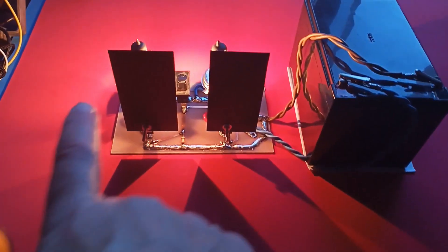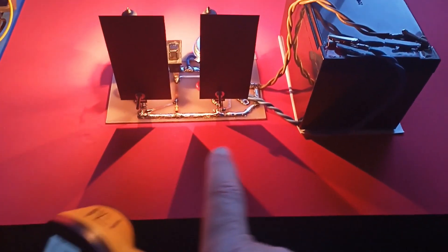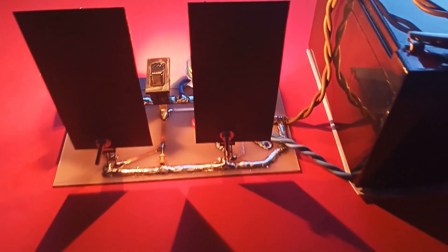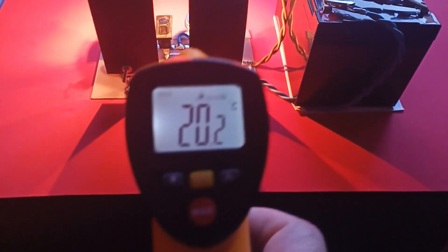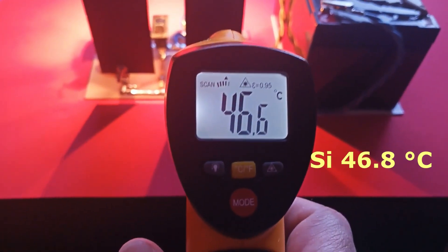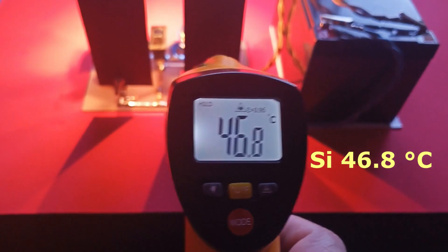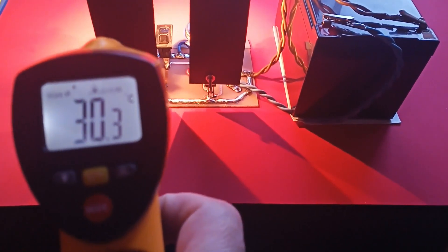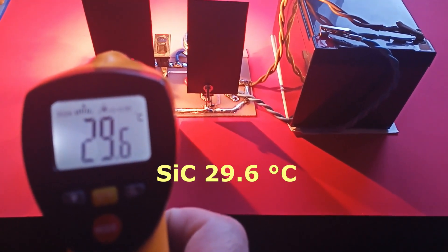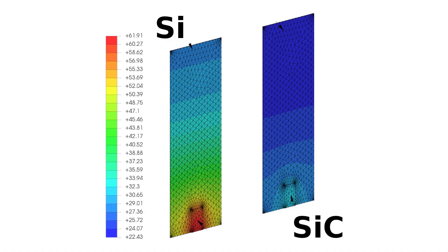Another straightforward test involves measuring the temperature dissipated by the two MOSFETs. For this measurement, one side of the heat sinks was painted black to allow a thermal gun to work effectively. After a few minutes of operation, it can be observed that the heat sink for the silicon MOSFET is hotter than that of the SiC MOSFET. This indicates greater efficiency of the latter.